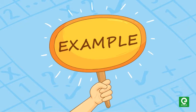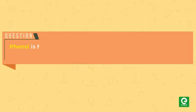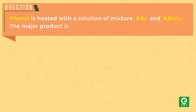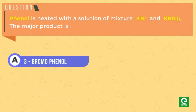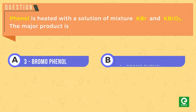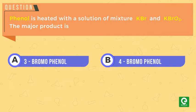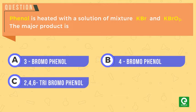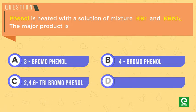Let's look at an example on Phenol. Phenol is heated with a solution of mixture KBr and KBrO3. The major product is: option A) 3-bromophenol, option B) 4-bromophenol, option C) 2,4,6-tribromophenol, or option D) 2-bromophenol.